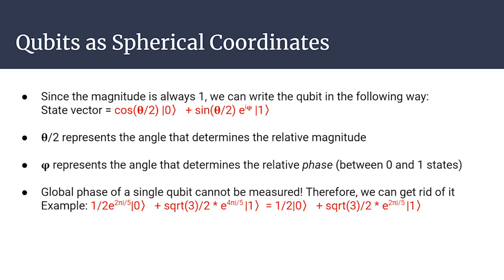Because the magnitude is always 1, and recalling that cos²θ + sin²θ = 1, we can write the qubit state in terms of an angle θ/2. The reason it's θ/2 is because it simplifies a mathematical expression we'll use later. The portion of magnitude going to the 0 state is cos(θ/2), and the portion going to the 1 state is sin(θ/2). That angle determines the relative magnitude between 0 and 1.